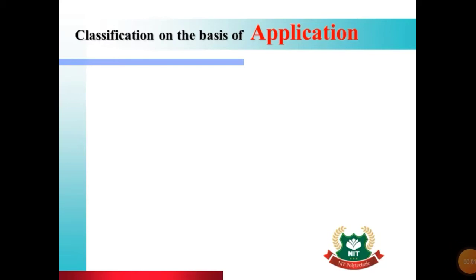We classify engines on the basis of applications. The first type is known as automobile engines. Automobiles are the most widely used engines as a power source. All automobile vehicles have their own power source, which is nothing but the engine. Different types of engines are used for different types of applications.